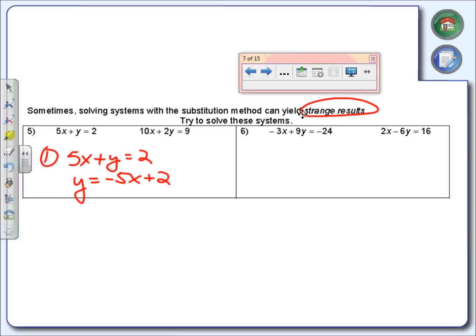I'm doing exactly everything the same way I did earlier. Now I'm going to use substitution. I'm going to take out the y on the other equation, and I'm going to replace it with negative 5x + 2. Here's what I've got.